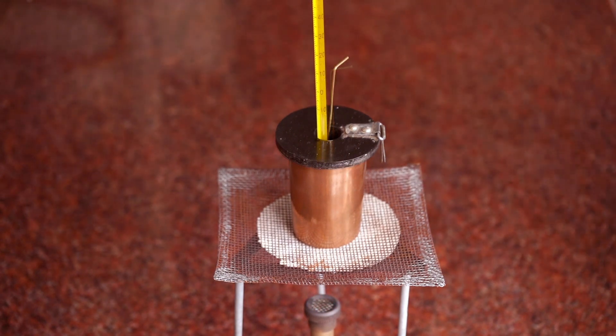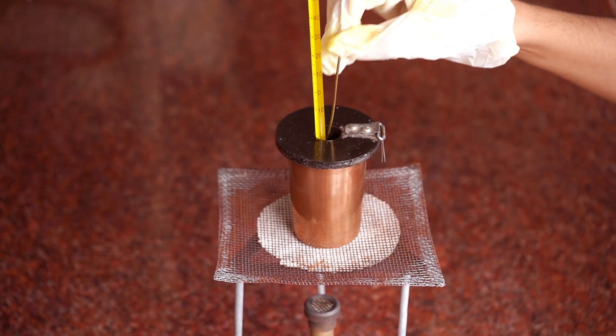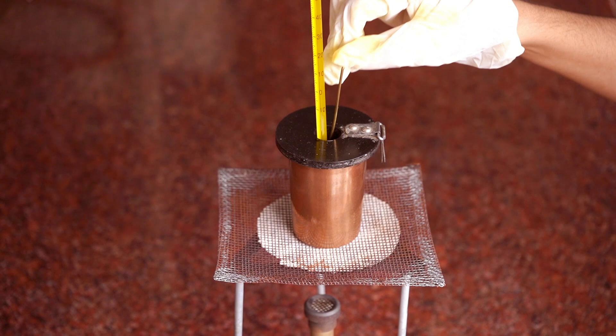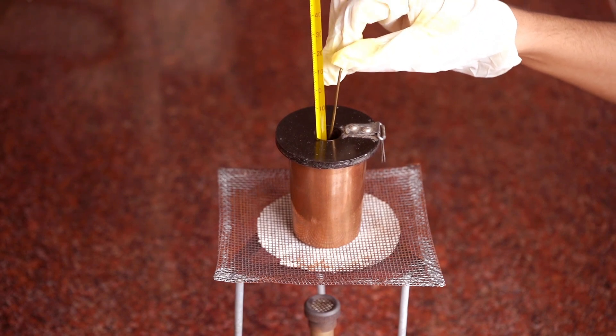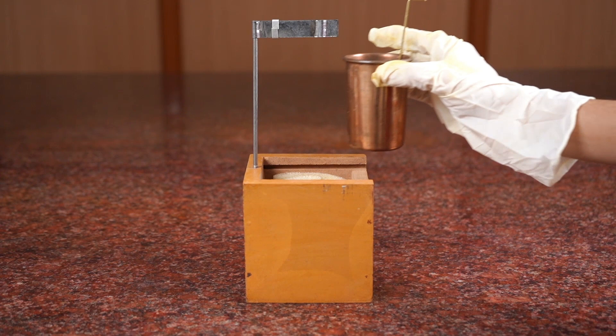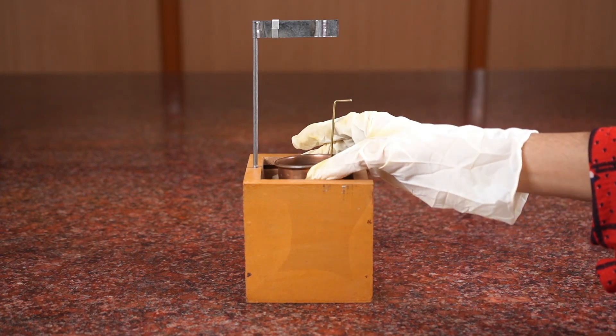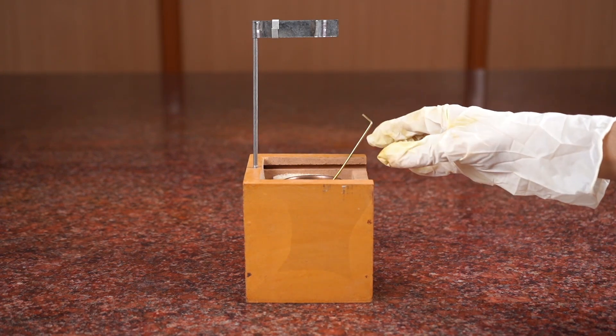Stop heating when temperature reaches 40 degrees Celsius above room temperature. Place calorimeter in wooden box to cover the calorimeter properly.